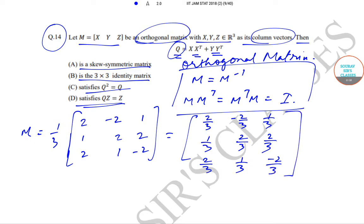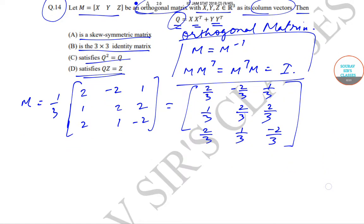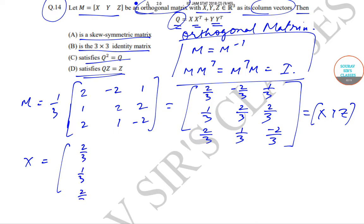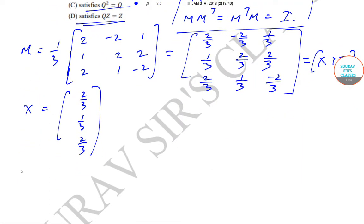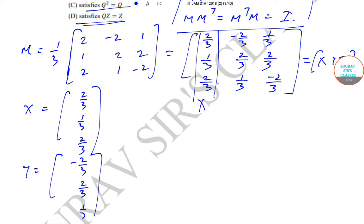So from this matrix, the column vector x equals [2/3, 1/3, 2/3]^T, and similarly y equals [−2/3, 2/3, 1/3]^T. These are the two column vectors x and y that we will use.